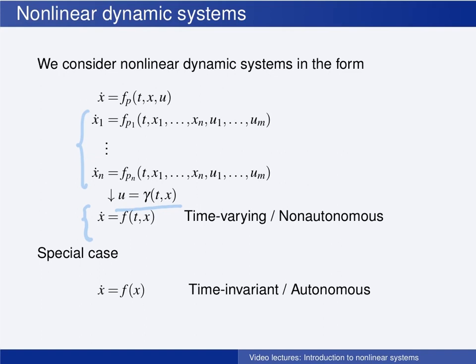For instance, the scalar equation x dot equals exponential function e raised to minus time t multiplied by x is time-varying. In the book by Khalil, the term non-autonomous is used instead of time-varying. After this book was written, however, the term autonomy has come to mean something else, and we will therefore use the term time-varying instead.